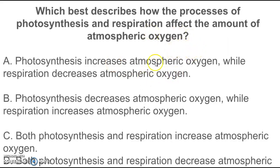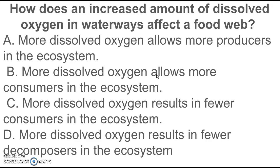How does an increased amount of dissolved oxygen in waterways affect the food web? Keep in mind the food web, we're discussing the relationship between the plants and the animals. If there's more oxygen, that's going to be really good for the animals. More dissolved oxygen allows more consumers. Keep in mind who needs the oxygen: animals do. The other word for animals would be consumers. So if there's more oxygen in the water, that means you can sustain or allow more animals to live. So the answer would be B.